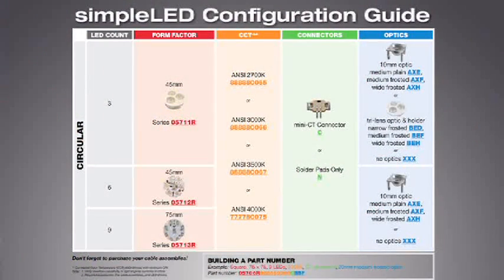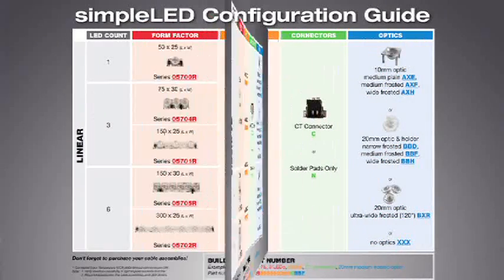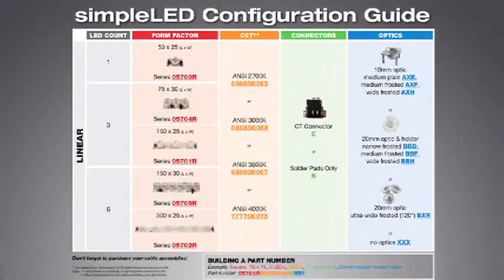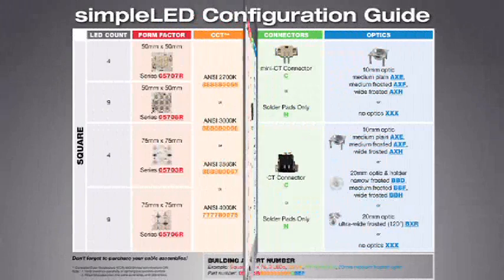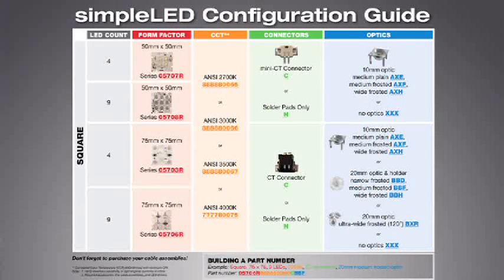For your light engine options, we have three different form factors to choose from: circular, linear, and square. Each are available in multiple lengths and diameters that can be found in our configuration guides, all of which can be downloaded today from our website.